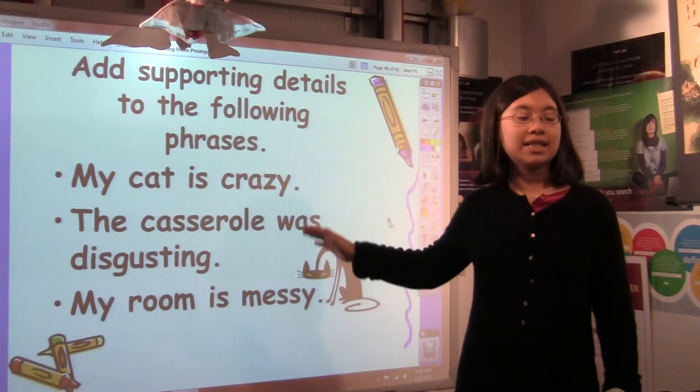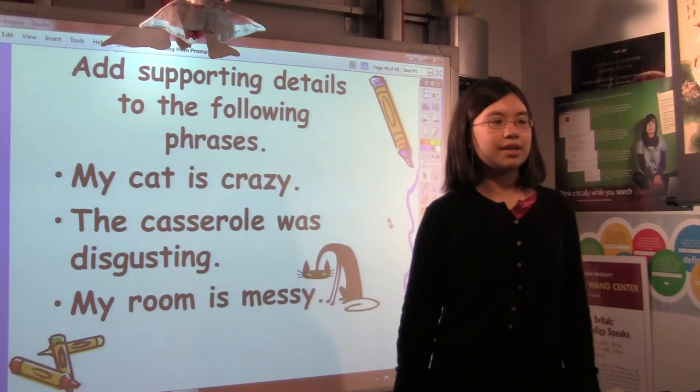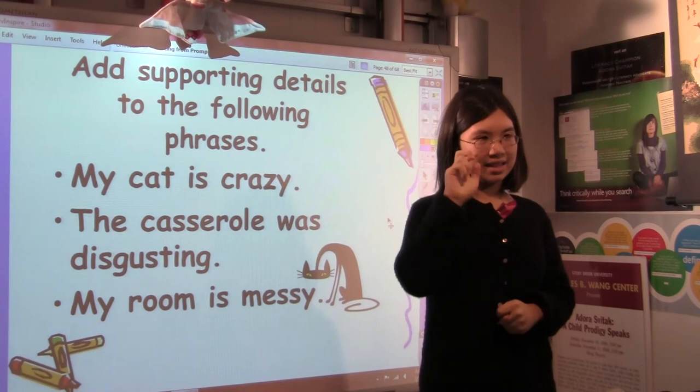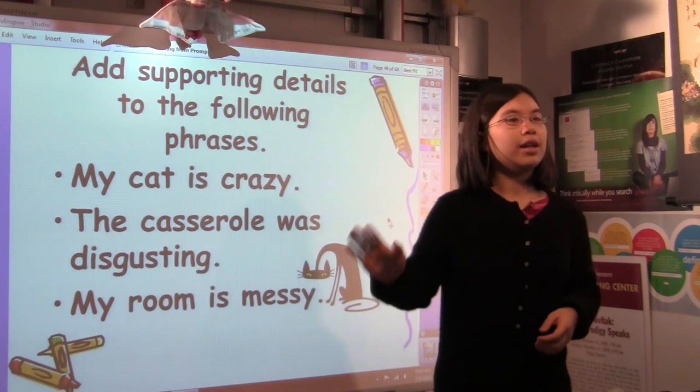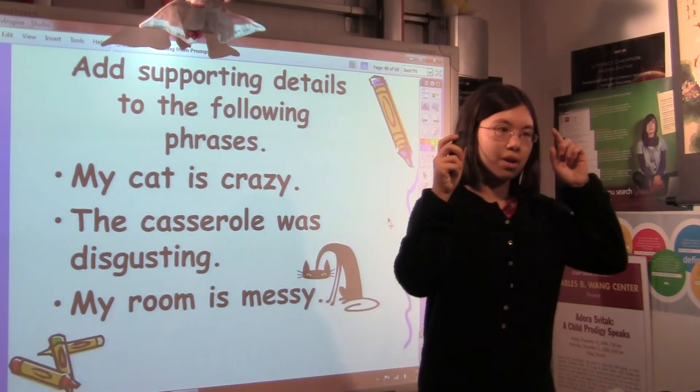So it's really easy to add descriptive details and it also makes it a whole lot more funny. When you just say the casserole was disgusting it's sort of a vague image of whatever gross foods we've eaten but we don't know how disgusting it is. Like how gooey and gluey and green and moldy pizza-ish it is. So you can make your writing a whole lot more fun and a whole lot more interesting and a whole lot easier to visualize when you add descriptive details and use good word choice.